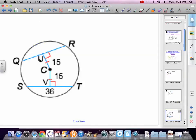Here we have a couple of chords, QR and ST. They both happen to be the same distance from the center. So if ST is 36, then QR is 36. Again, perpendicular distance, same distance, shortest distance, same.